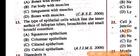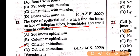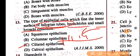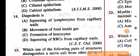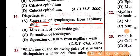Question 13: the type of epithelial cells which line the inner surface of the fallopian tube, bronchioles, and small bronchi — it is ciliated epithelium. Ciliated epithelium either absorbs substances or carries them — in the fallopian tube it carries egg cells from one part to another. Next: diapedesis involves squeezing of lymphocytes, which can cause cramps and pain.